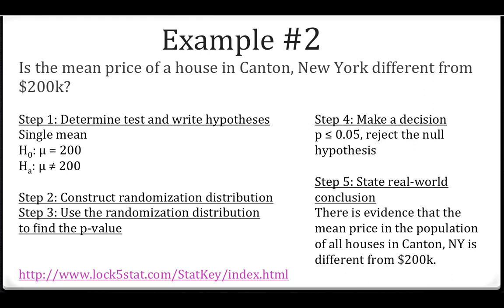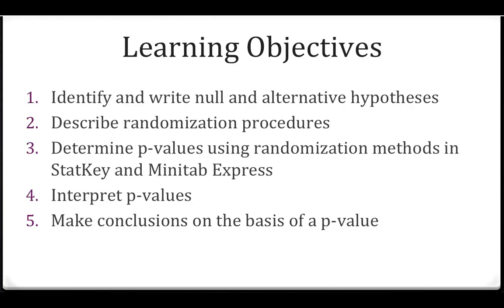There are many more examples in the online notes this week, including some that show you how to take data from an Excel or Minitab Express file, put it into StatKey, and run a randomization test. To review the learning objectives: one, identify and write null and alternative hypotheses; two, describe randomization procedures; three, determine p-values using randomization methods in StatKey and Minitab Express; four, interpret p-values; five, make conclusions on the basis of a p-value. I recommend going to the online notes and watching more example videos. As always, if you have any questions this week, please post them to the discussion board on Canvas.